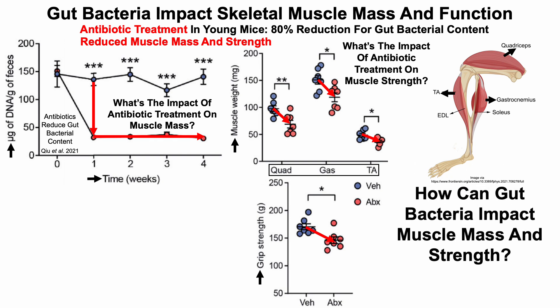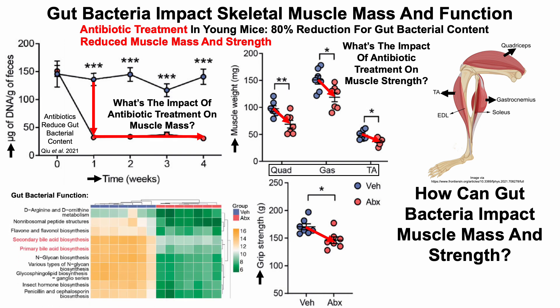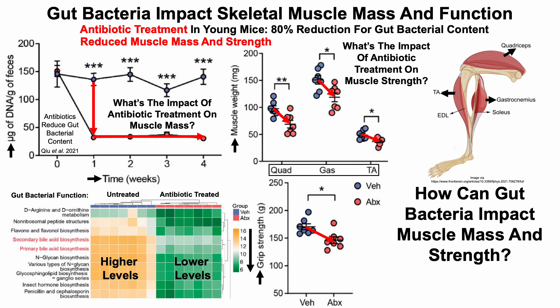How can gut bacteria impact muscle mass and strength? The authors of this study looked at gut bacterial functions — this is just a small snapshot, and I'll have a link to the paper in the video description. On the left we've got the untreated mice, and on the right we've got bacterial gene counts for the antibiotic-treated mice. Orange is indicative of higher levels of bacterial gene counts, and green is indicative of lower levels, going from higher to lower as you move from orange to green.